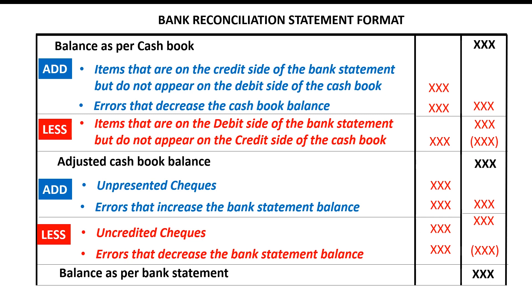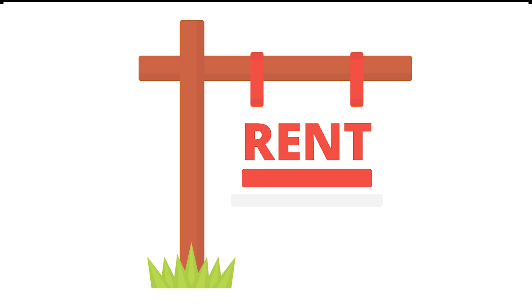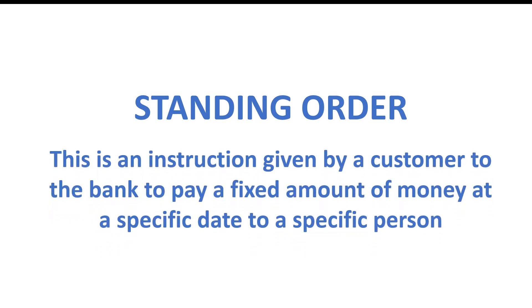Let's get started with what we mean by a standing order. Let's say you have a debt to pay and you agreed with the lender that you will be paying a monthly installment until the debt is cleared. Rather than paying cash to the moneylender, you decide to instruct your bank to deposit money into the moneylender's bank account every month. A standing order is therefore an instruction given by a customer to the bank to pay a fixed amount of money to a specific person on a specific date.